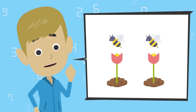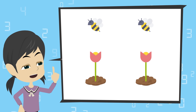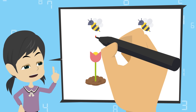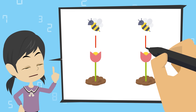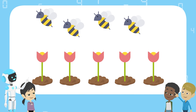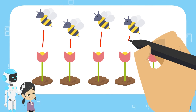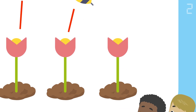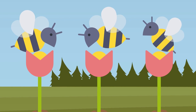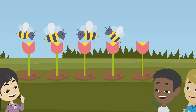Let's land the bees on each flower. How can we do that? How about connecting each bee and flower with a line? That is a great idea. Let's connect each bee and flower with a line. Oh, all the bees could land on the flower.